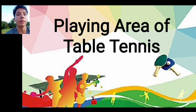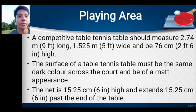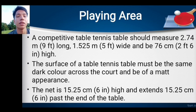This is my report: Playing Area of Table Tennis. A competitive table tennis table should measure 2.74 meters or 9 feet long, 1.52 meters or 5 feet wide, and 76 centimeters or 2 feet 6 inches in height. The surface must be the same dark color across the surface and be of a matte appearance. The net is 15.25 centimeters or 6 inches in height.